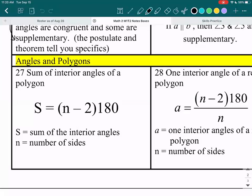Alright, so box number 27 is where we're starting off, and we have sum of interior angles of a polygon. So S is the sum of the interior angles, as it says on the bottom right over here. Sum of the interior angles is equal to n minus 2 times 180, and the n stands for the number of sides.